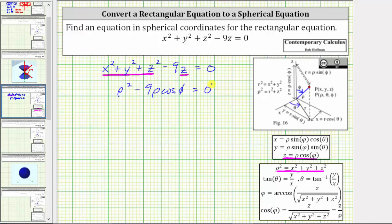Now the equation does only contain rho and phi, and therefore it is a spherical equation, and we could stop here.